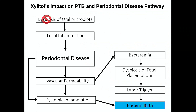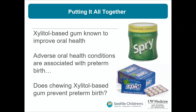Xylitol also independently dampens local inflammation through the NF-κB signaling pathway, ultimately preventing periodontal disease. Putting it together: xylitol-based chewing gum is known to improve oral health, and adverse oral health conditions are associated with preterm birth. So does chewing xylitol-based gum in pregnancy prevent preterm birth?